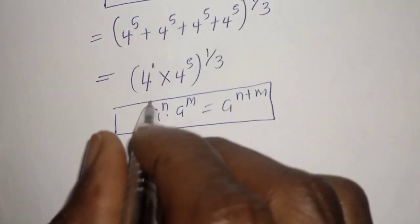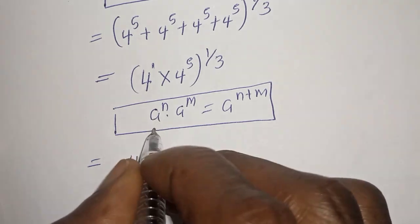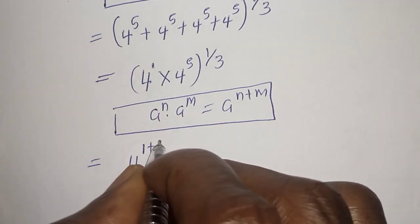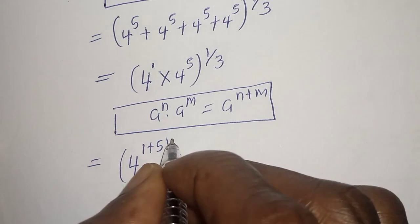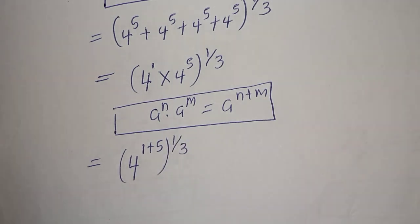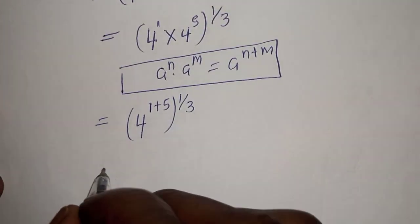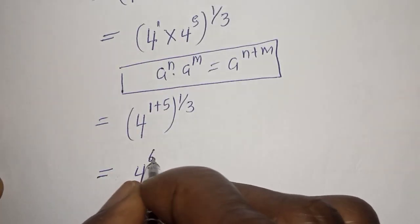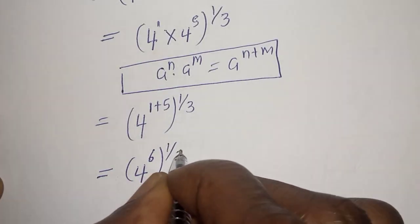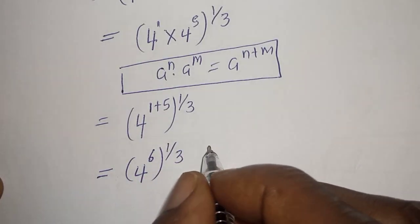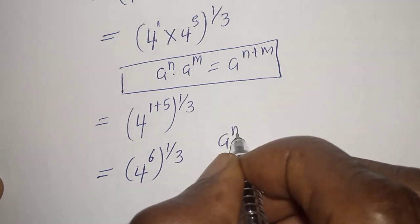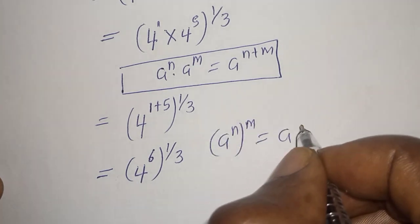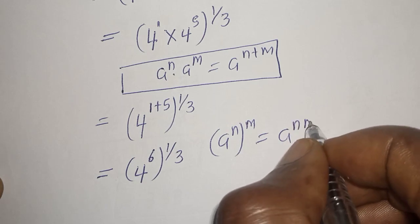Then this can be written as 4 raised to power 1 plus 5, to the power of 1 over 3, which equals 4 raised to power 6, to the power of 1 over 3. And if you have a raised to power n, to the power of m, this equals a raised to power n times m.